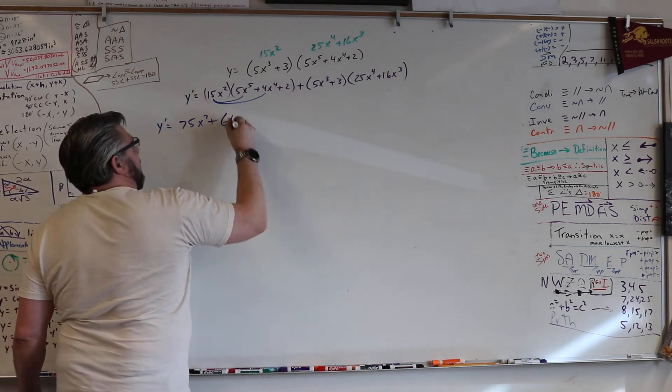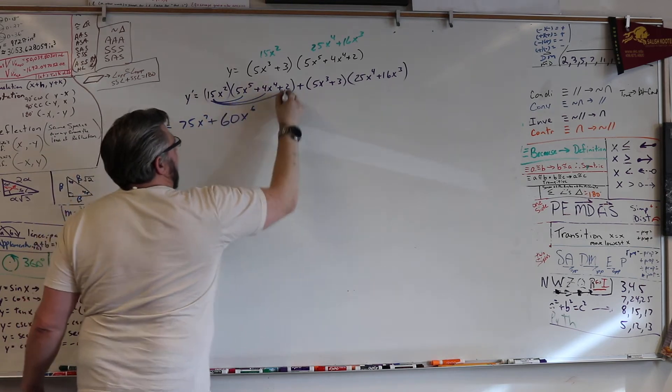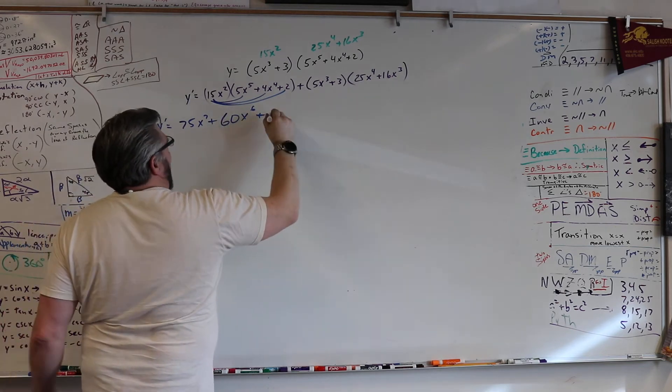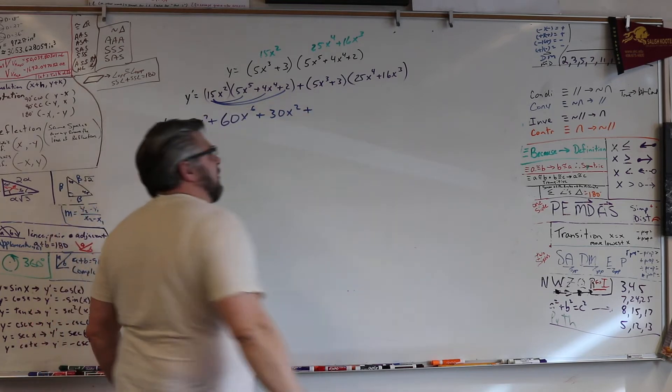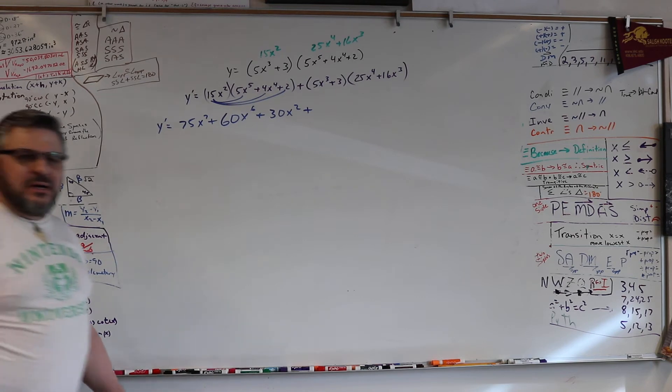All right. So 60x to the 6th. Right? Plus 30x squared. Plus... Uh-oh. Now we got a true clamshell, right?